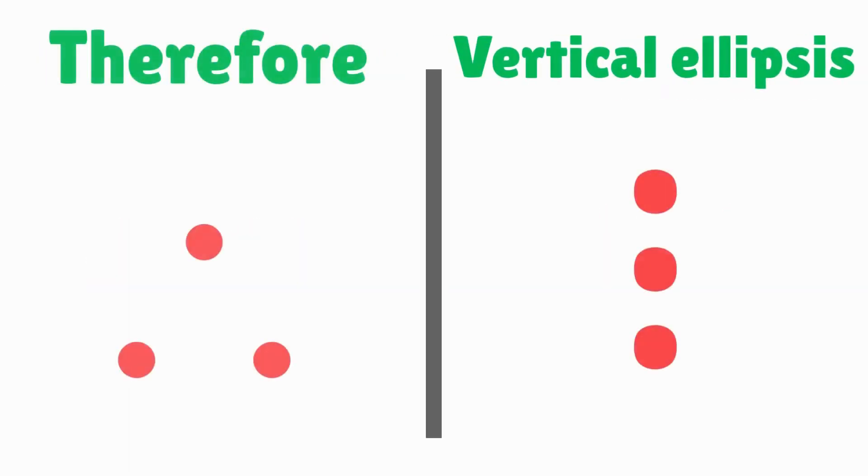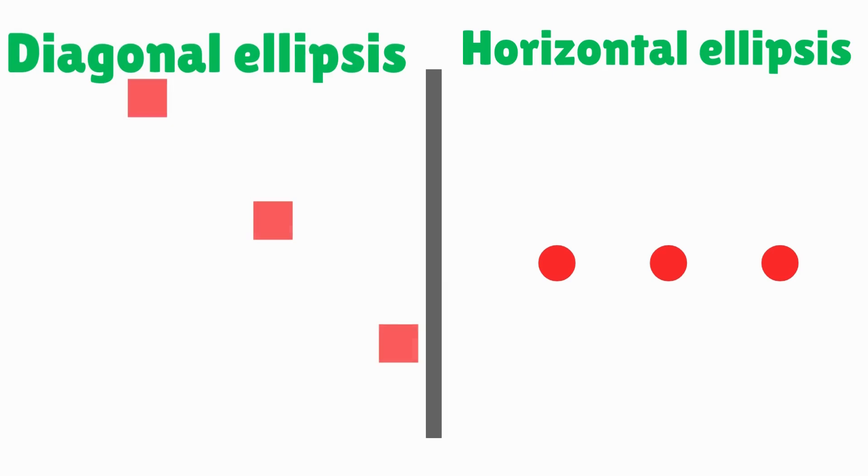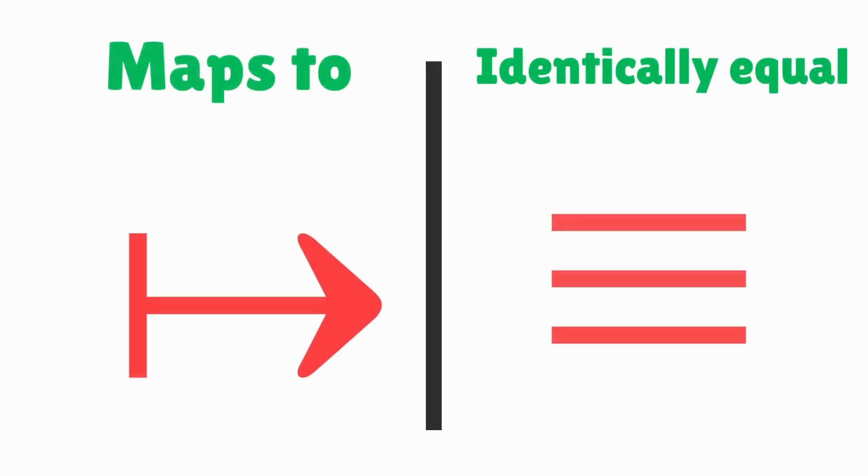Therefore, vertical ellipsis, diagonal ellipsis, horizontal ellipsis, maps to, identically equal.